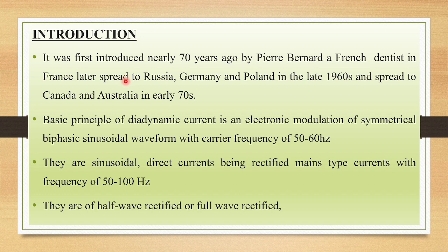Later it spread to different countries like Eurasia, Germany and Poland in the late 1960s, and spread to Canada and Australia in the early 1970s. The basic principle of diadynamic current is an electronic modulation of symmetrical biphasic sinusoidal waveform with a carrier frequency of 50 to 60 Hz.